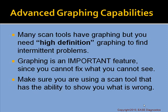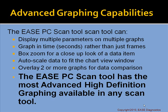The first power feature is advanced graphing capabilities. Many scan tools have graphing, but you need high-definition graphing to find intermittent problems. Graphing is an important feature since you cannot fix what you can't see. The Ease PC Scan Tool can display multiple parameters on multiple graphs, graph in time rather than just frames, and has a box zoom feature for close-up looks. We have auto-scale data and the ability to overlay two or more graphs for easy data comparison. I firmly believe the Ease PC Scan Tool has the most advanced high-definition graphing available in any scan tool.